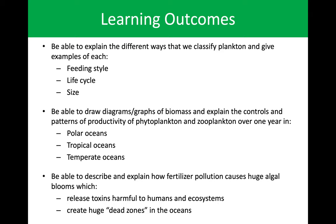We also want to draw diagrams of phytoplankton biomass and how that corresponds to zooplankton biomass over the course of a year for three different areas: the polar oceans, the tropical oceans, and the temperate oceans, which is where we live. Finally, we want to describe and explain how pollution can cause algal blooms, which in our waters often results in the release of toxins that can harm us and the local ecosystem. If you've ever heard about baby sea lions washing up on shore in the spring, it's usually attributed to these algal blooms off our coastline.